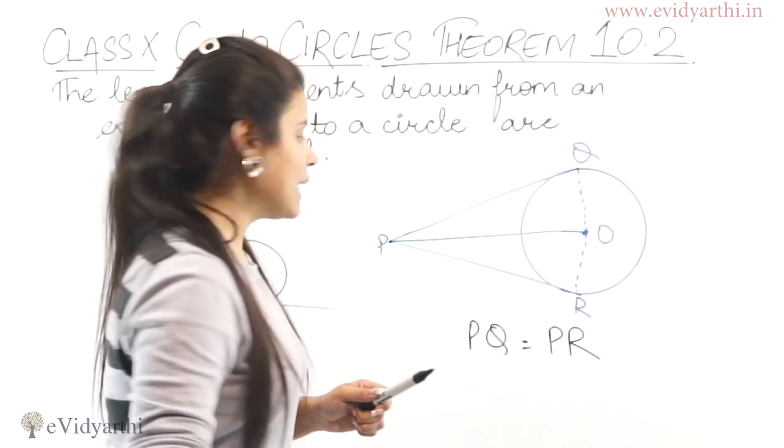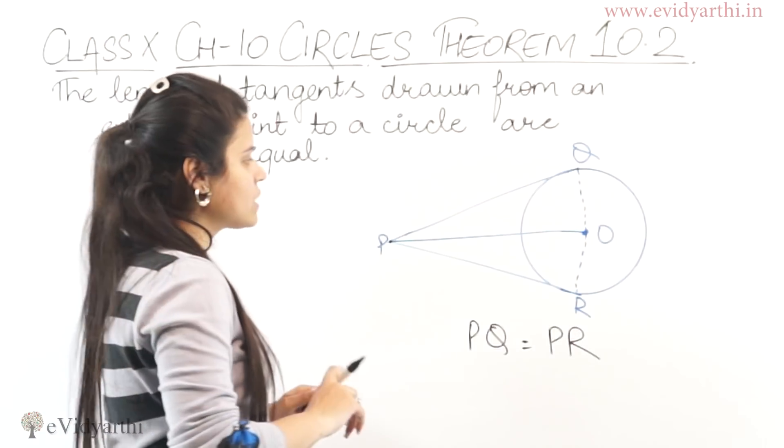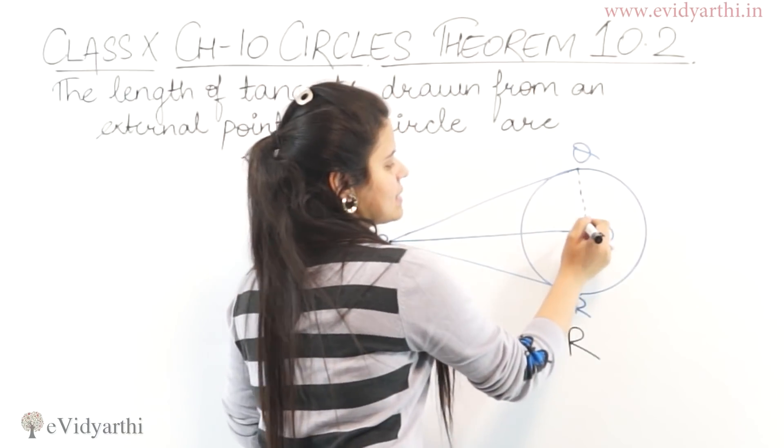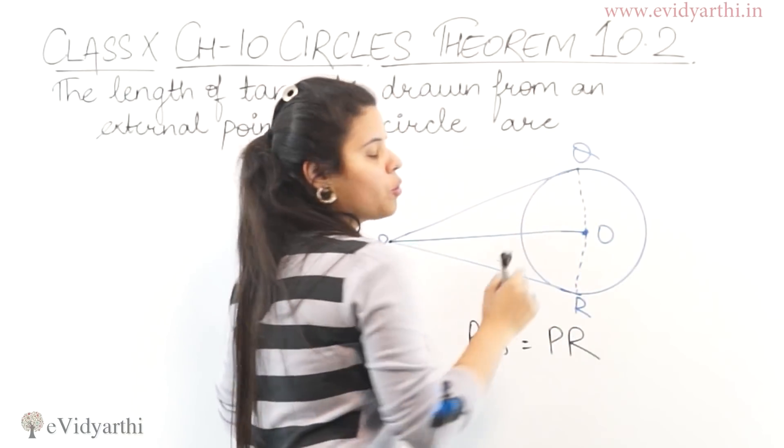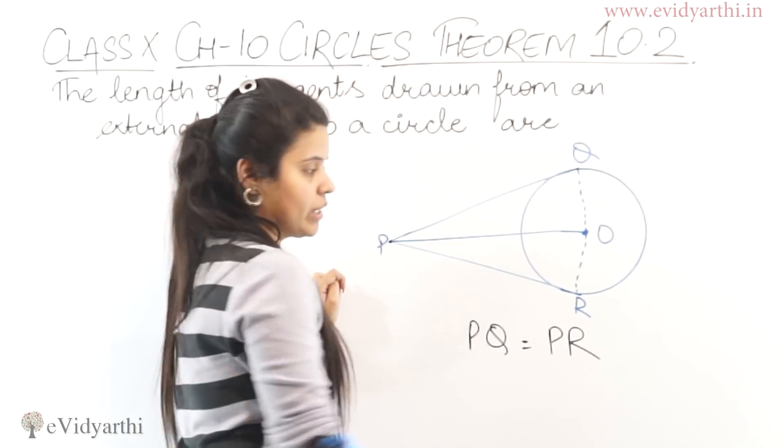What do we have given here? Given that we have these two tangents, we have done some construction here, which is the center O. We have joined Q from the center and R from the center and P.